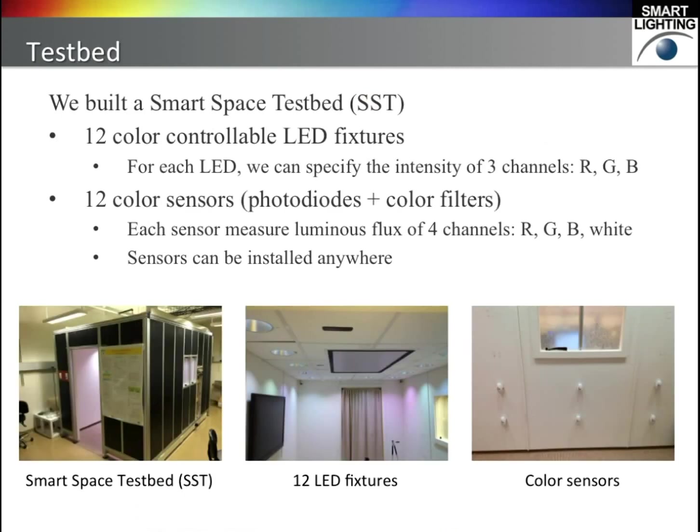To demonstrate our ideas, we built a smart room. In this room, there are 12 color controllable LED fixtures in the ceiling, and we have 12 color sensors. These sensors can be installed anywhere. For each LED, we can specify the intensity of the RGB channels. And for each color sensor, the measurement is four numbers: red, blue, green, and white.